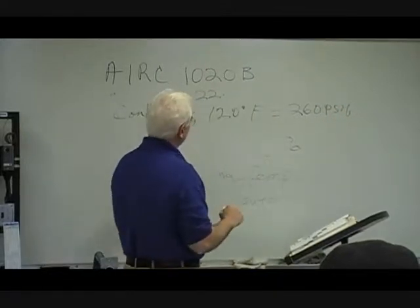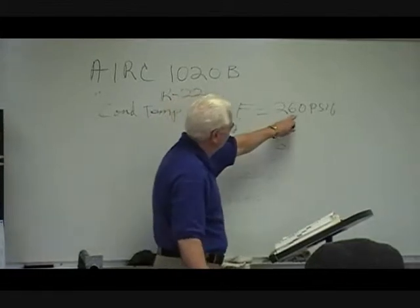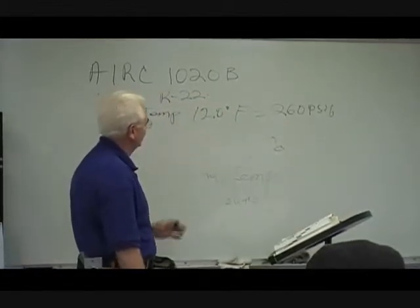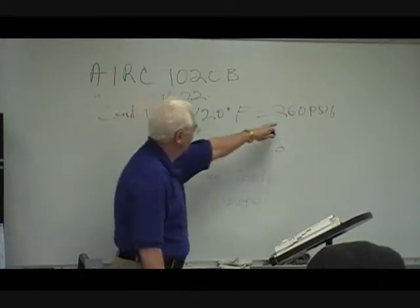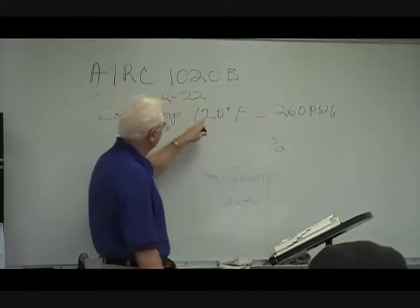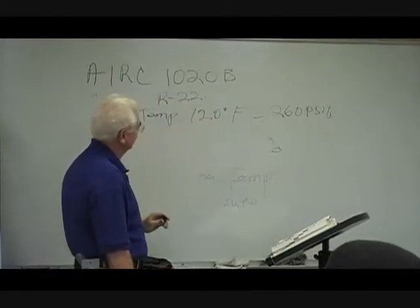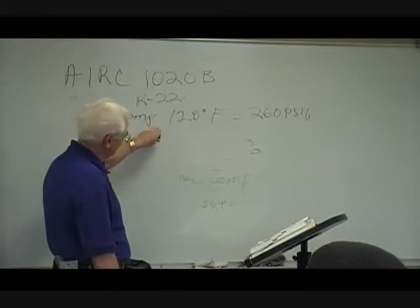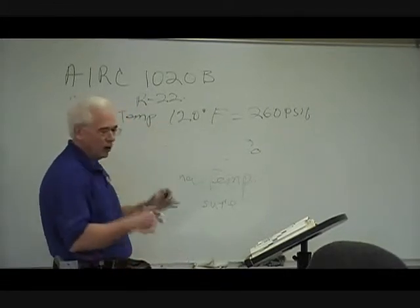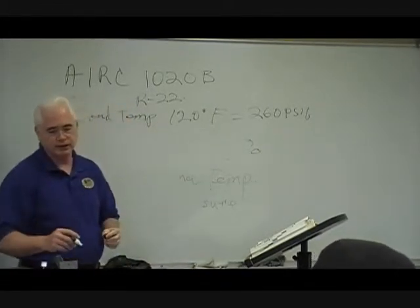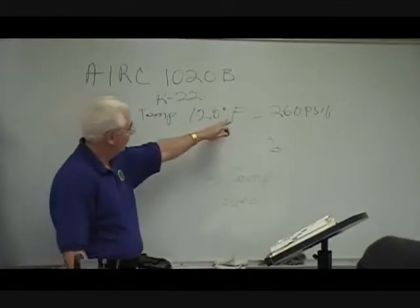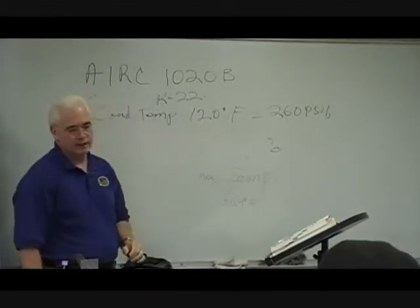What does that mean? That means at that pressure, you put your gauges on, you read your high side pressure — 260 psi gauge — you convert that to temperature. That's a temperature of 120 degrees. That is the point in the condenser where all your refrigerant is 100% liquid, and from that point on, your sub-cooling begins.